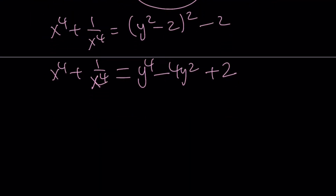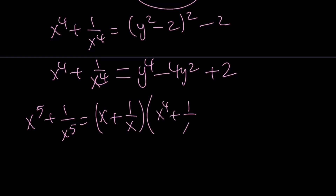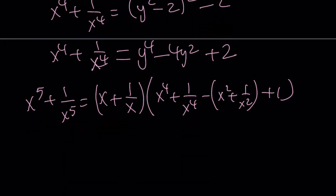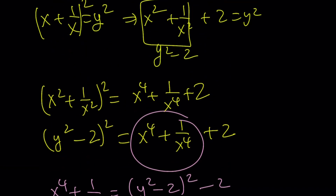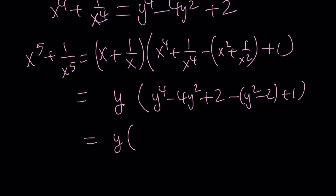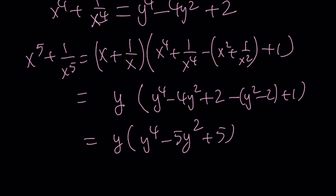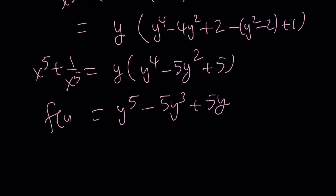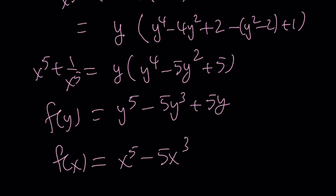Let's plug these into our formula. x to the fifth plus 1 over x to the fifth equals x plus 1 over x times x to the fourth plus 1 over x to the fourth minus x squared plus 1 over x squared, plus 1. Substituting: x plus 1 over x is y, x to the fourth plus 1 over x to the fourth is y to the fourth minus 4y squared plus 2, and x squared plus 1 over x squared is y squared minus 2. Distributing and multiplying by y gives y to the fifth minus 5y cubed plus 5y, so f of x equals x to the fifth minus 5x cubed plus 5x.